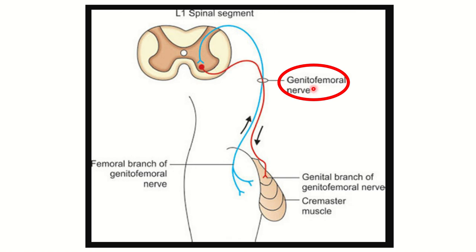A motor response is then generated and exits through the anterior horn. This is the genital branch of the genitofemoral nerve, which passes through the anterior horn of the spinal cord and reaches the cremasteric muscle, causing its contraction and producing the cremasteric reflex.